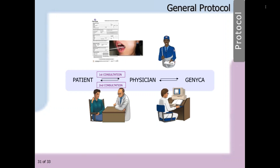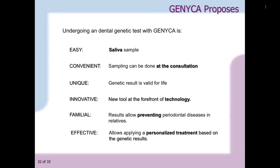This is a summary of the general protocol. The specialist will receive the patient in an initial consultation, where a sample will be taken and a request form is filled out for the genetic test. The physician will send the sample to the laboratory by mail, where the test will be performed. The laboratory will send the results to the physician through email with a password. The doctor will share the results with the patient through a second consultation where they will provide recommendations. Undergoing a dental genetic test is easy and painless. It is convenient because it can be done during the consultation. Genetic results are valid for life. It is innovative — a new tool for the specialist at the forefront of technology. It is familial because the results may prevent periodontal diseases in relatives. Lastly, it is effective because it applies a personalized treatment based on an individual's genetic results.